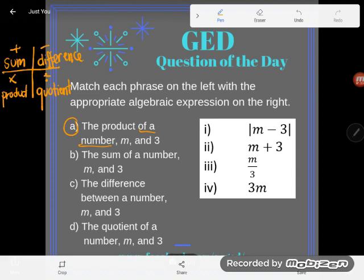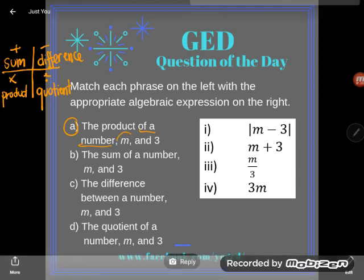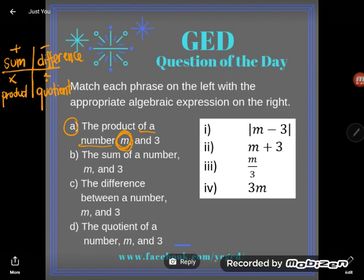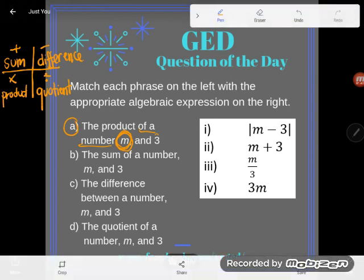when we don't know what the value of a number is, I hope that's clearer. Like we don't know if it's 7 or 33 or 84, then we will use a letter. So the product of a number, some number, m and 3.